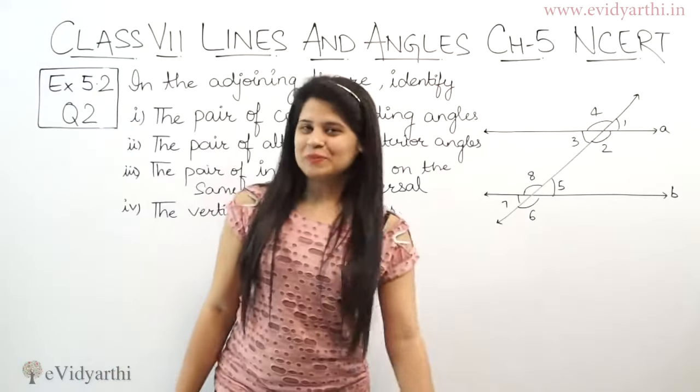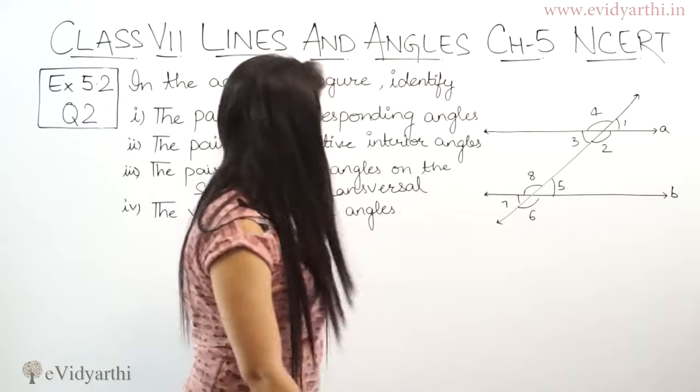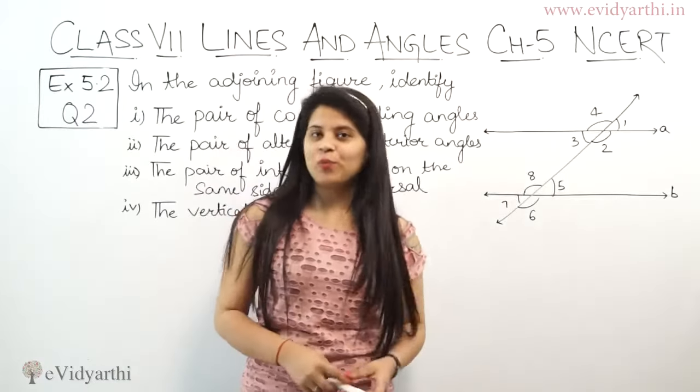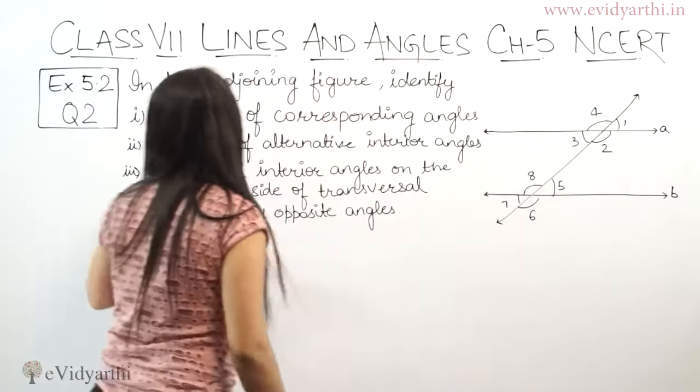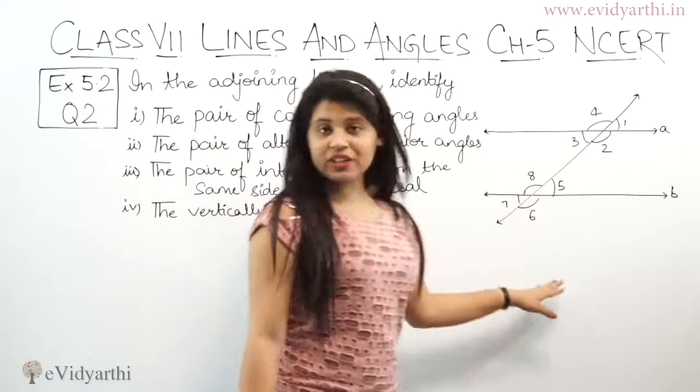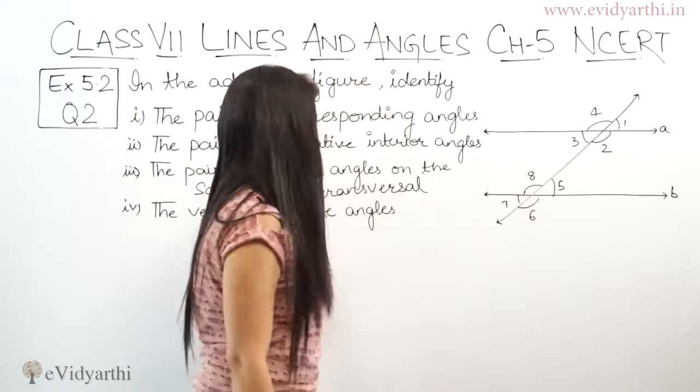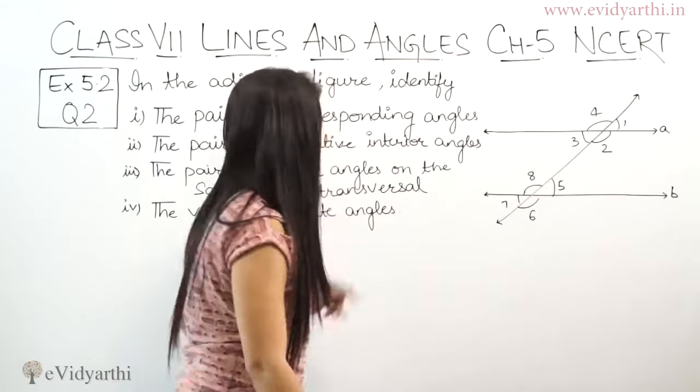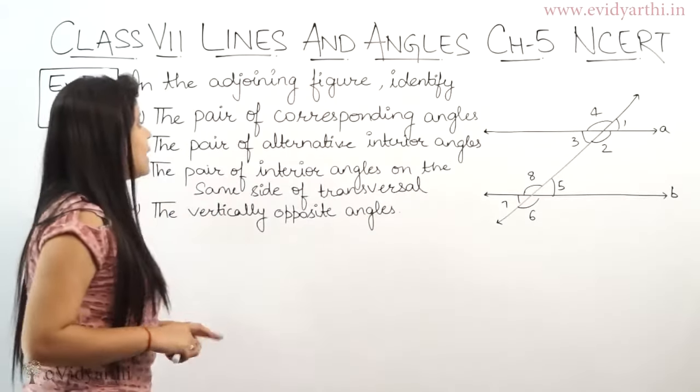Hello everyone, this is Manzi from Evidyarthi.in coming to question number 2, exercise 5.2. In the adjoining figure, identify - you have this figure given and these parts to identify. Let's see what this means. First part asks for the pair of corresponding angles.